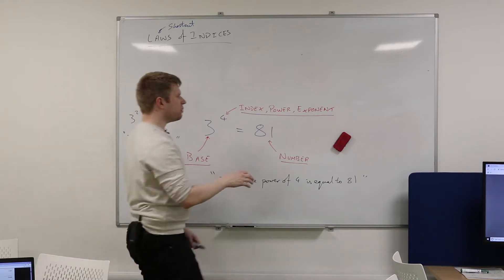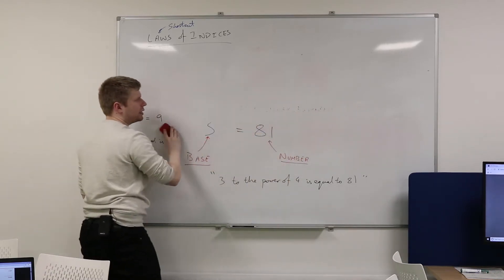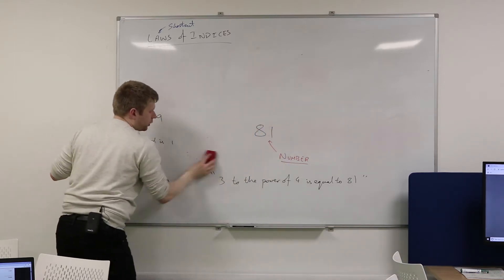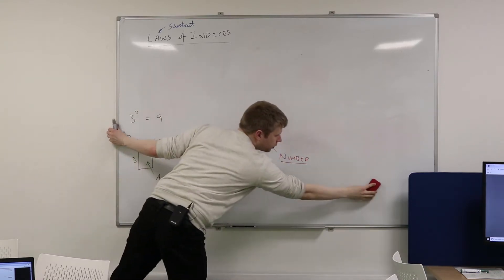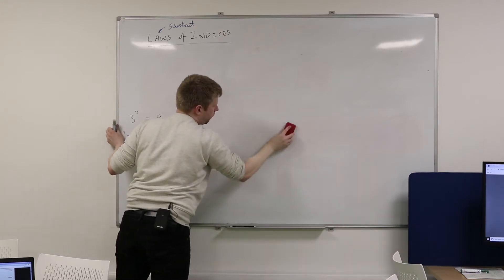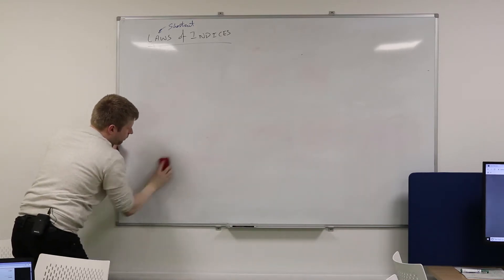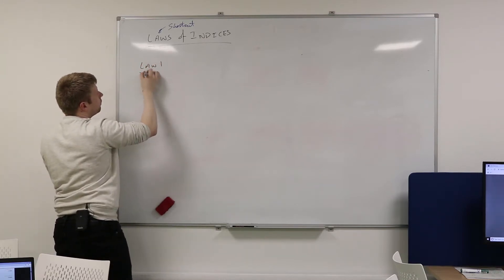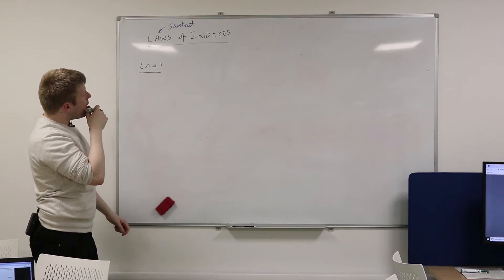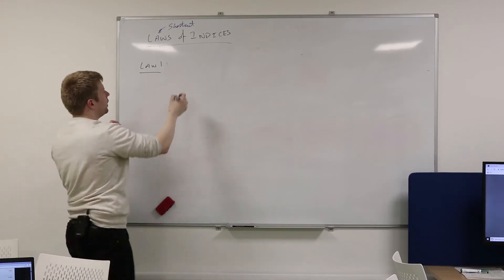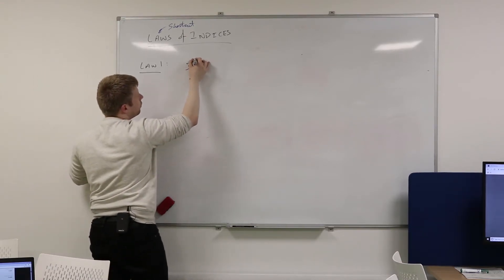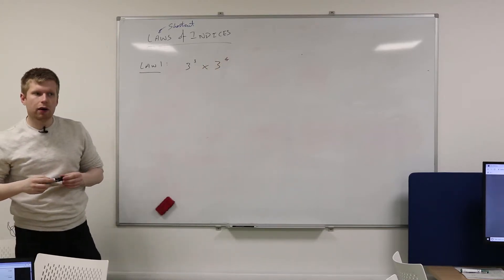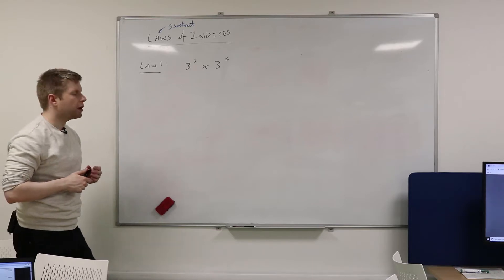And there are 8 of them, I think, though I think the last one we break into 2. So let's have a look. The first one is very, very simple. Let's call this one law 1. Let's suppose I have this. 3 cubed times by 3 to the power 4.